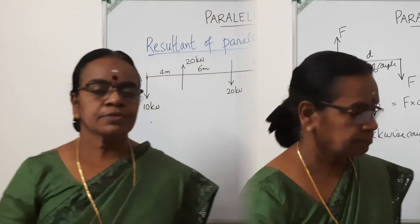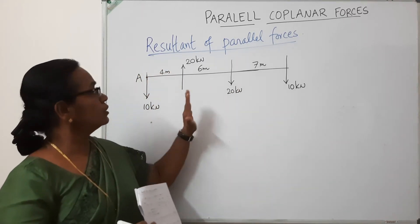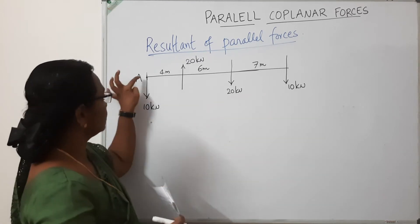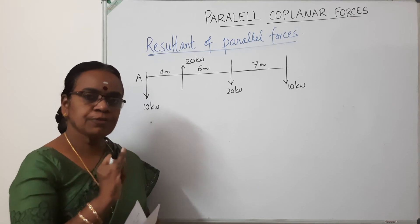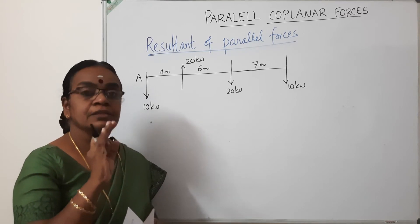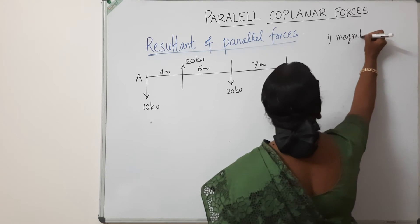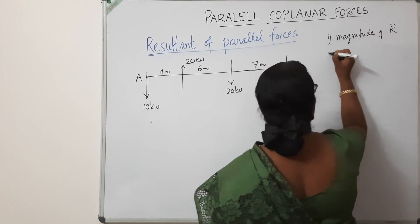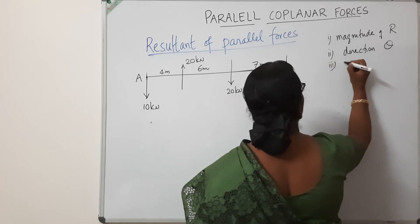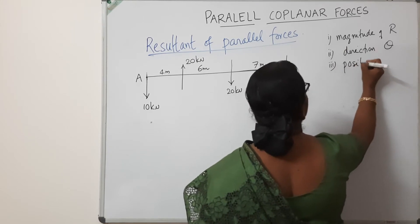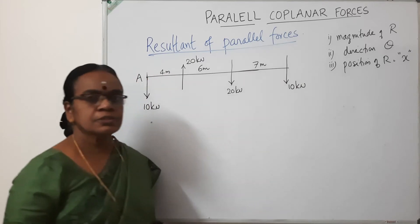Now we will work through a simple numerical example on parallel forces. The figure shows a system of parallel forces — 10 kN, 20 kN, 20 kN, and 10 kN at different distances from end A. The question is to find the resultant of this parallel force system. We need to find: one, the magnitude of the resultant; two, the direction of the resultant; and three, the position or location of the resultant, denoted as x.